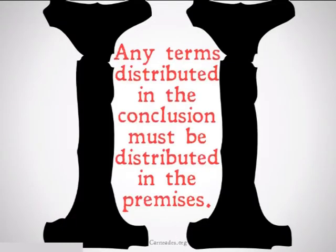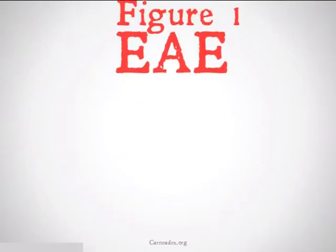Rule number two states: any terms distributed in the conclusion must be distributed in the premises. If the terms distributed in the conclusion are not distributed in the premises, the argument is going to be invalid because it does not align with rule two. Let's take a look at some examples.